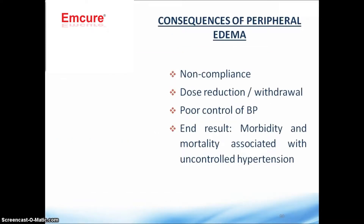What are the consequences of peripheral edema? First, there is non-compliance. Second, you need to reduce or withdraw the dose, leading to poor control of blood pressure. The end result is morbidity and mortality associated with uncontrolled hypertension, because patients on amlodipine sometimes stop treatment, which leads to uncontrolled hypertension and a rise in blood pressure.